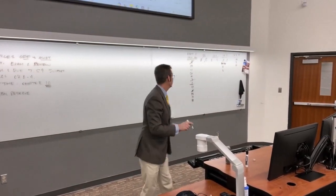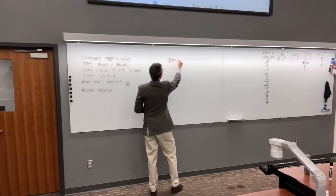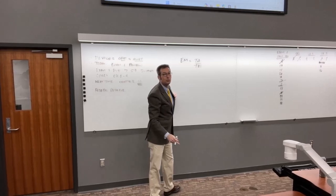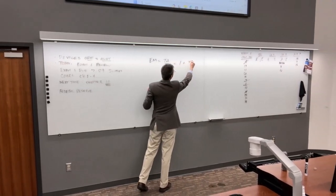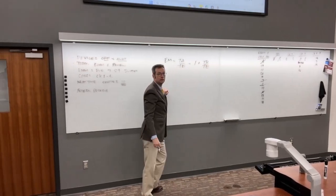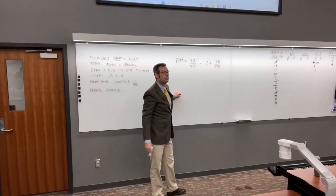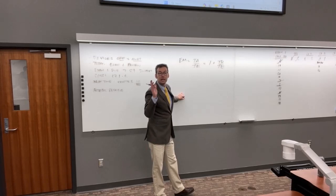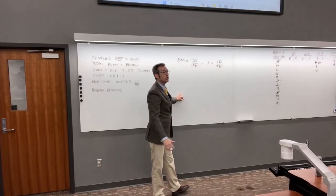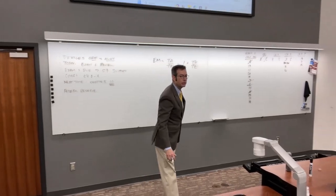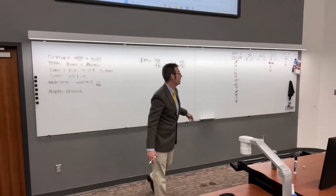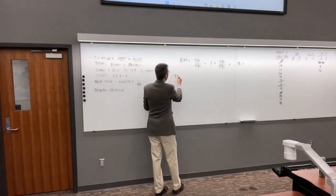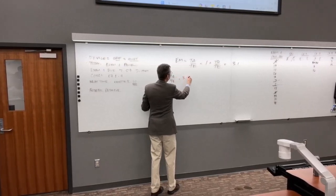The equity multiplier equals total assets over total equity, and it also equals 1 plus the debt-to-equity ratio. So if the debt-to-equity ratio is 2.1, then the equity multiplier is 3.1. That means total assets over total equity equals 3.1.